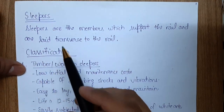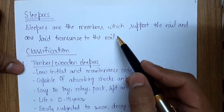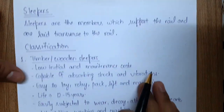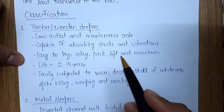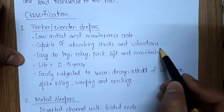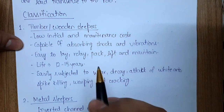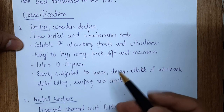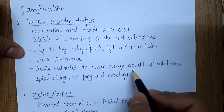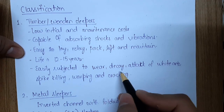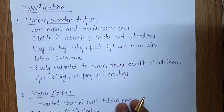The next topic is sleepers. Sleepers are the members which support the rail and transfer load to the ballast. Timber or wooden sleepers had very low initial and maintenance cost and could absorb shock and vibrations. They were easy to lay, relay, pack, lift and maintain due to low weight. Their lifespan was approximately 12 to 15 years. However, they are subject to wear, decay, attack by white ants, spike killing, warping, and cracking. These are now becoming obsolete.